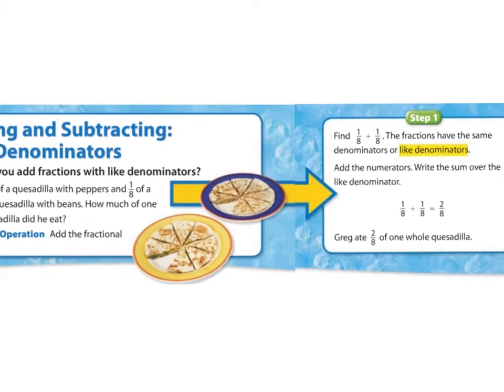You have one out of eight total. One, two, three, four, five, six, seven, eight. It's just telling me how many it's cut into, and this is telling me how many I ate. So, I ate two, and the whole is cut into eight pieces. So, Greg ate two-eighths of one whole quesadilla.